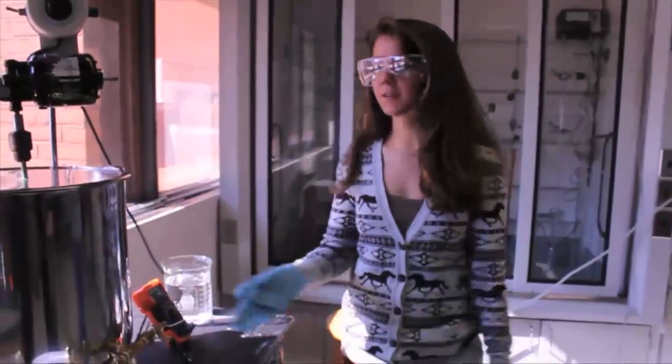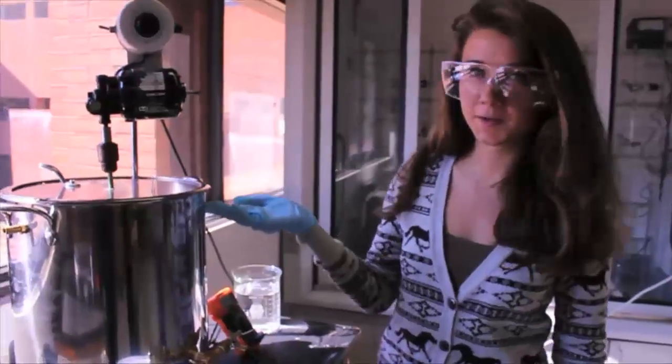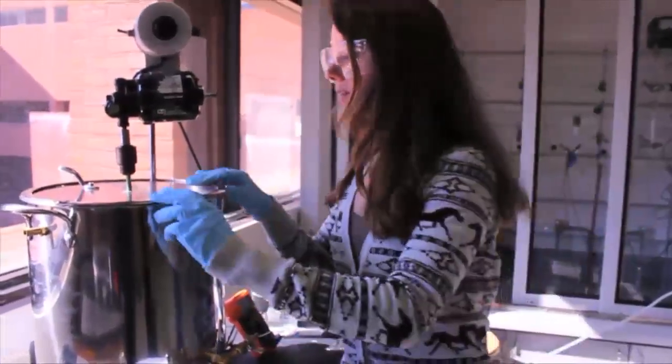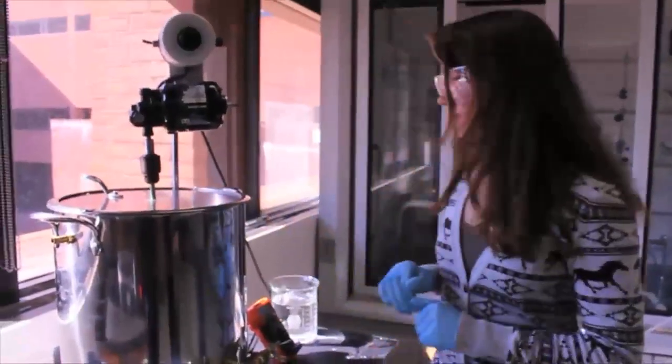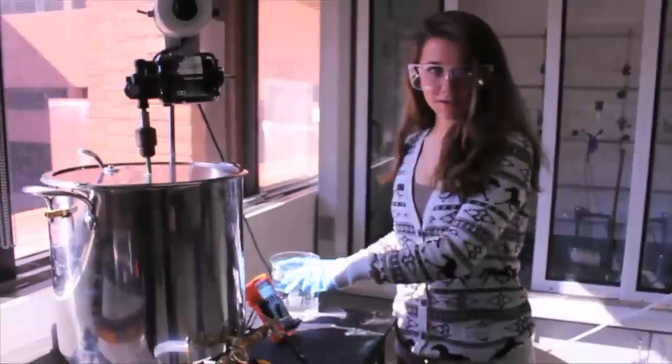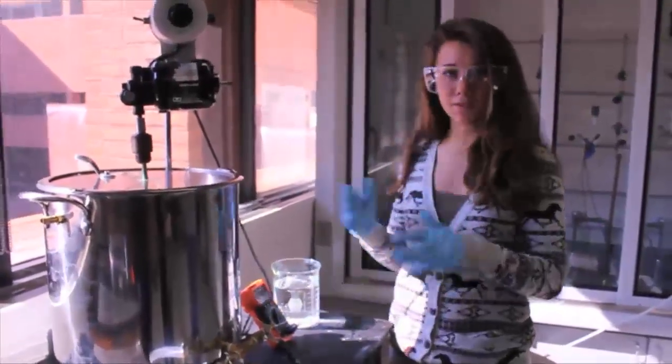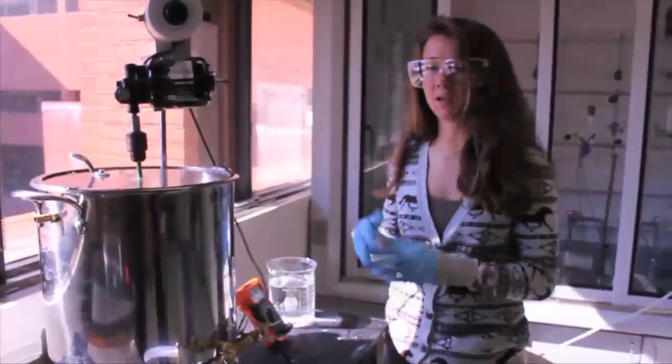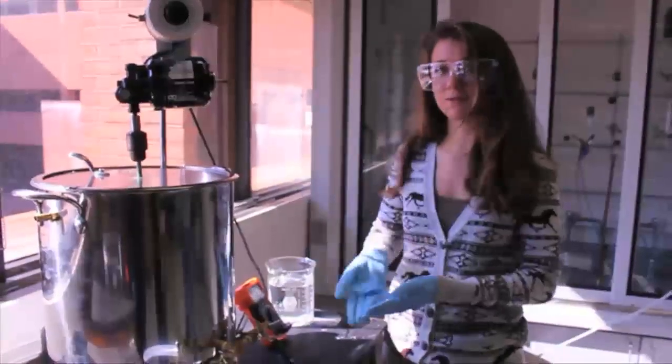So here we are with our small-scale design. This is our reactor. It's stirring at a moderate pace, and we currently have the waste vegetable oil inside. So what we're going to do is add this methanol in. We add about half at a time so that the reaction has a chance to catch up and mix properly before the methanol evaporates.